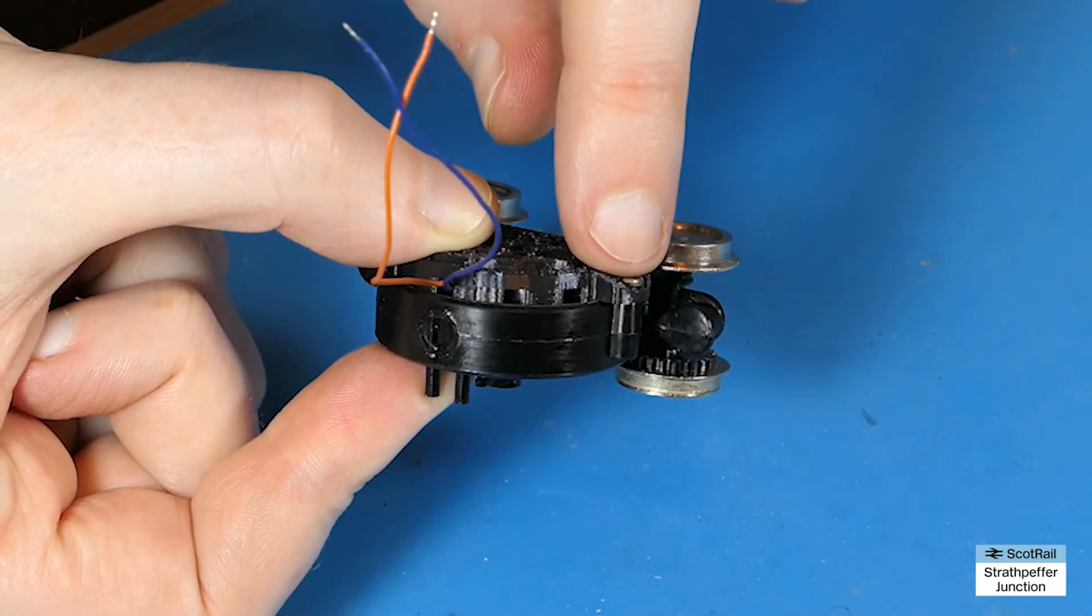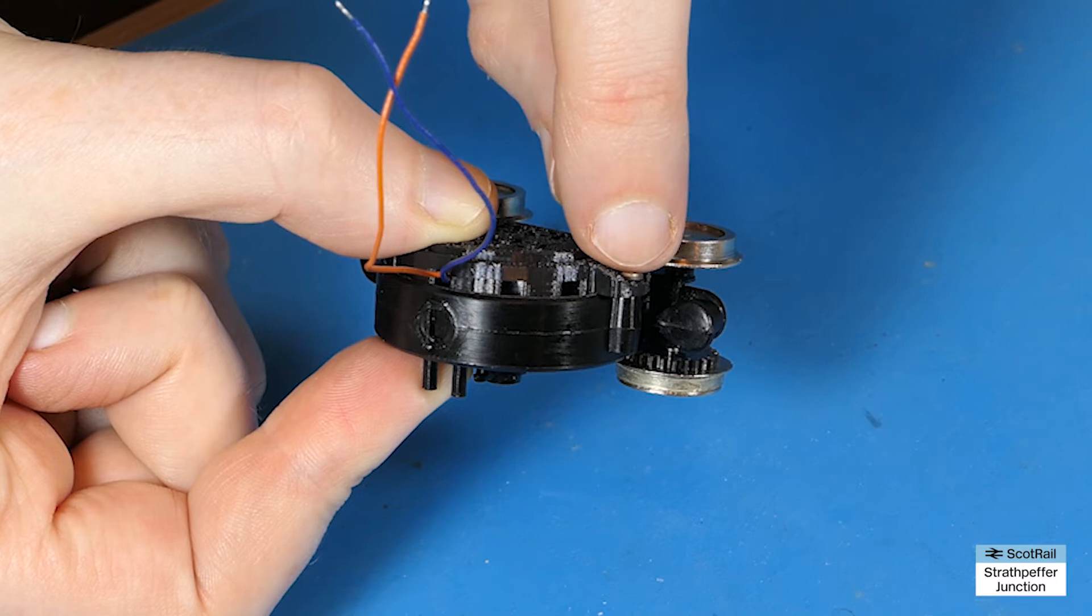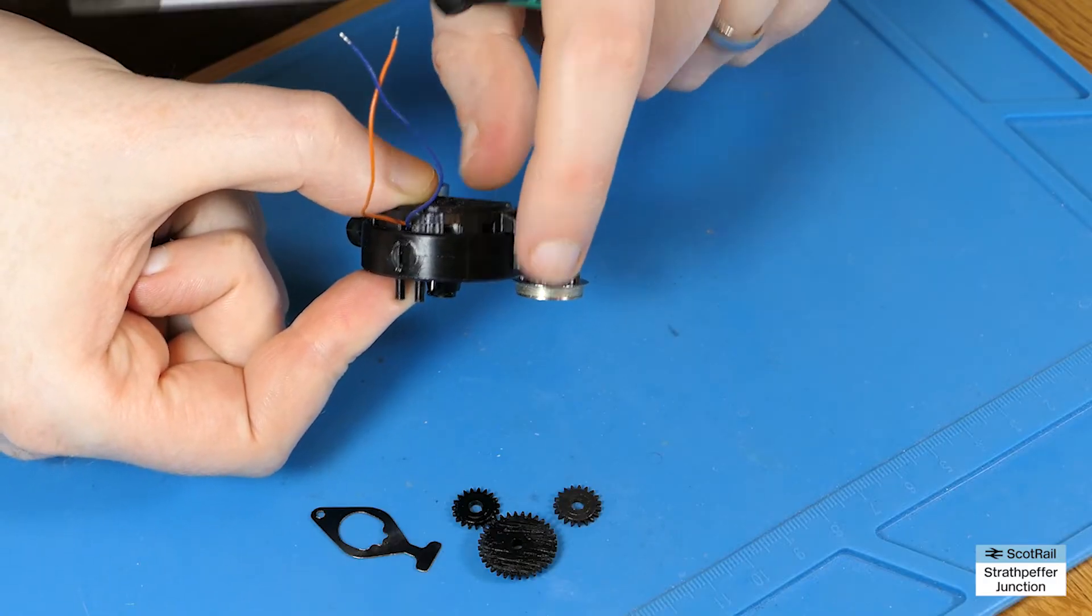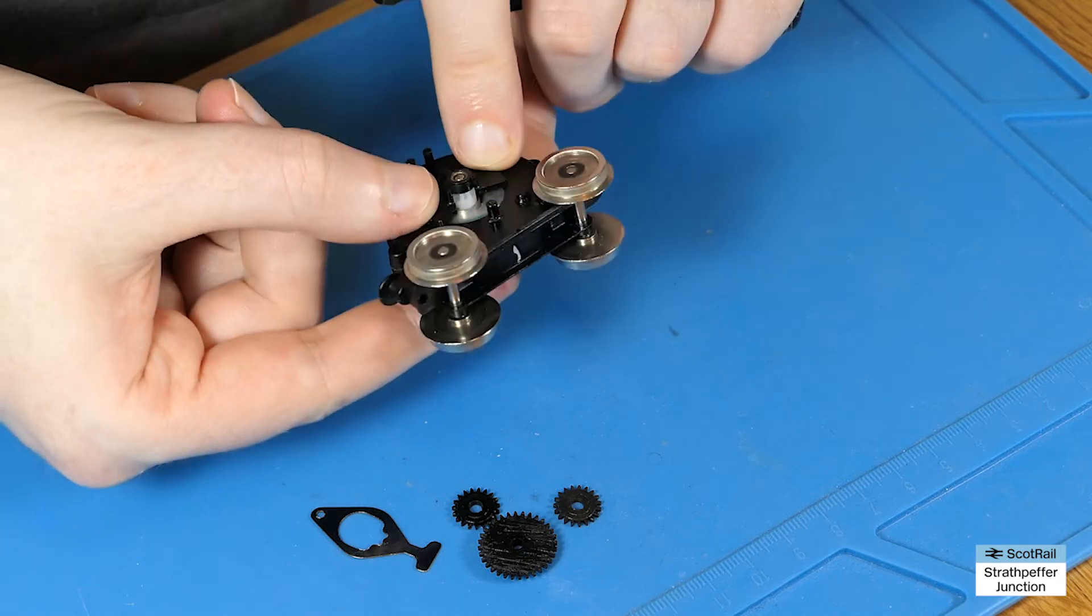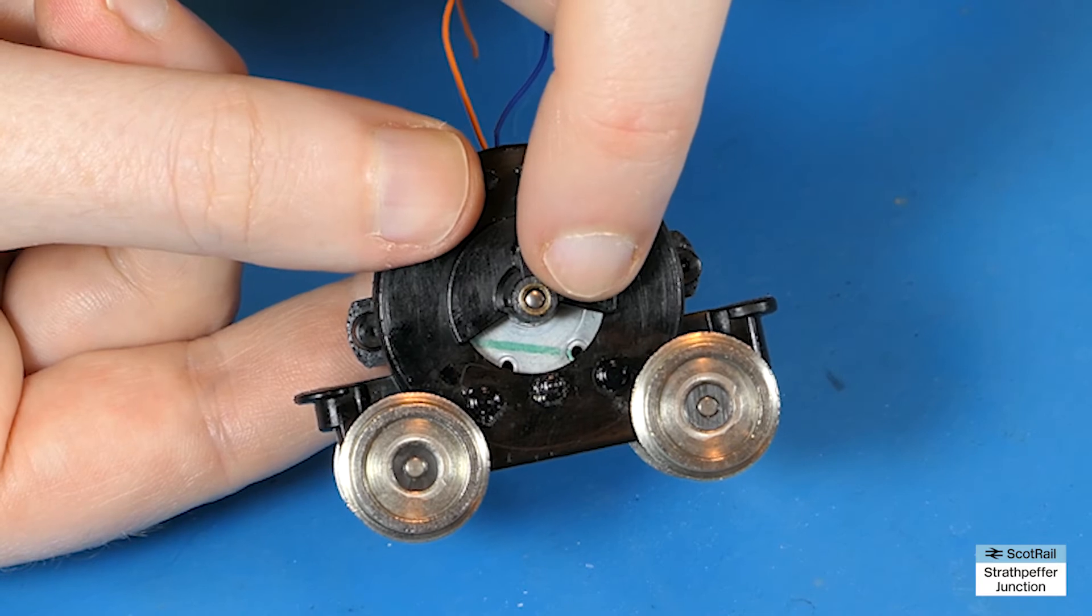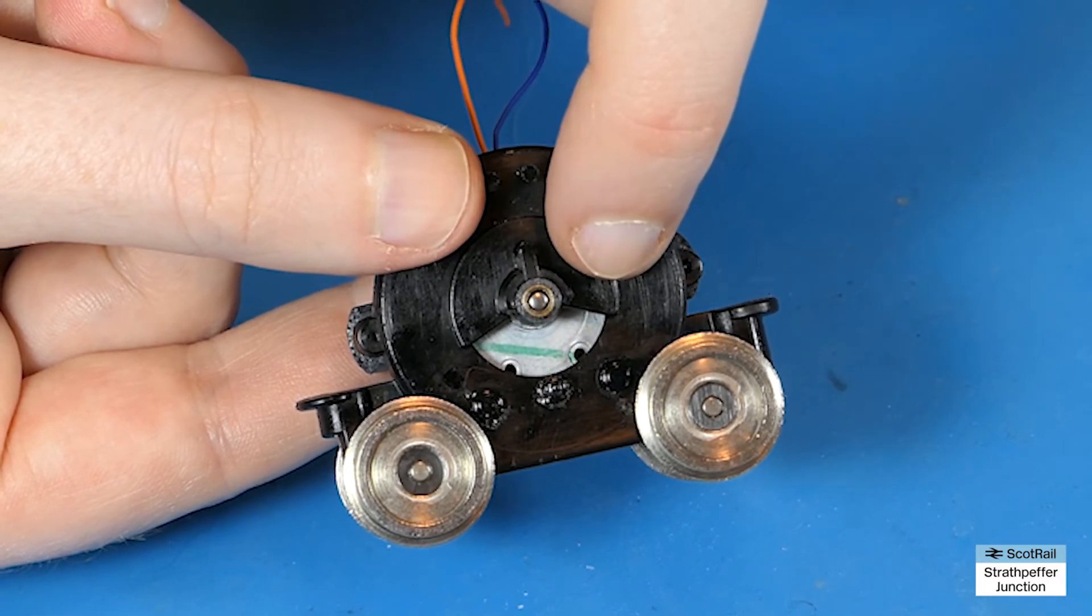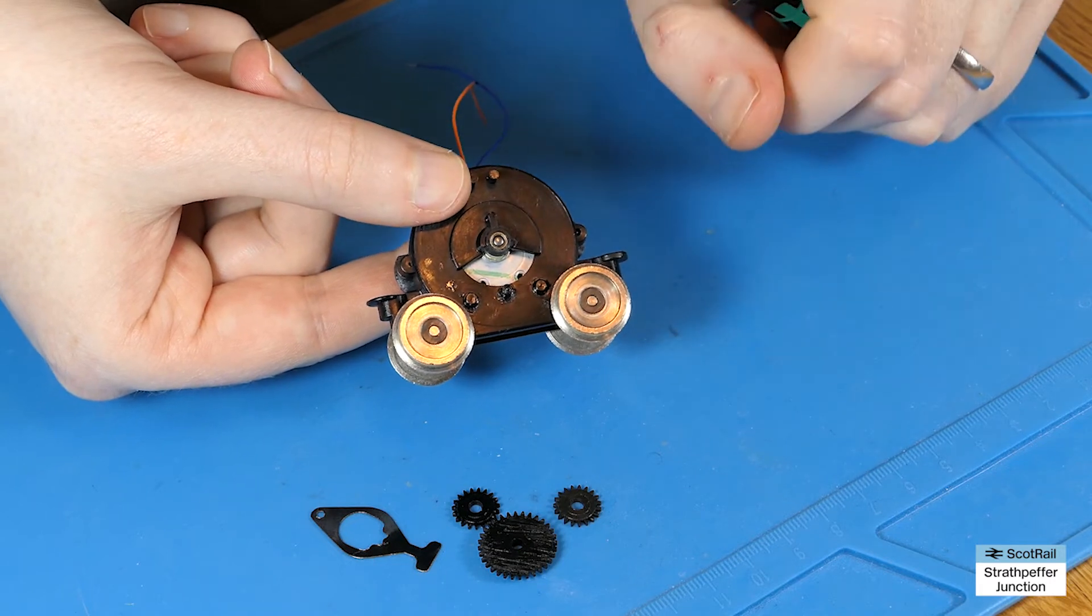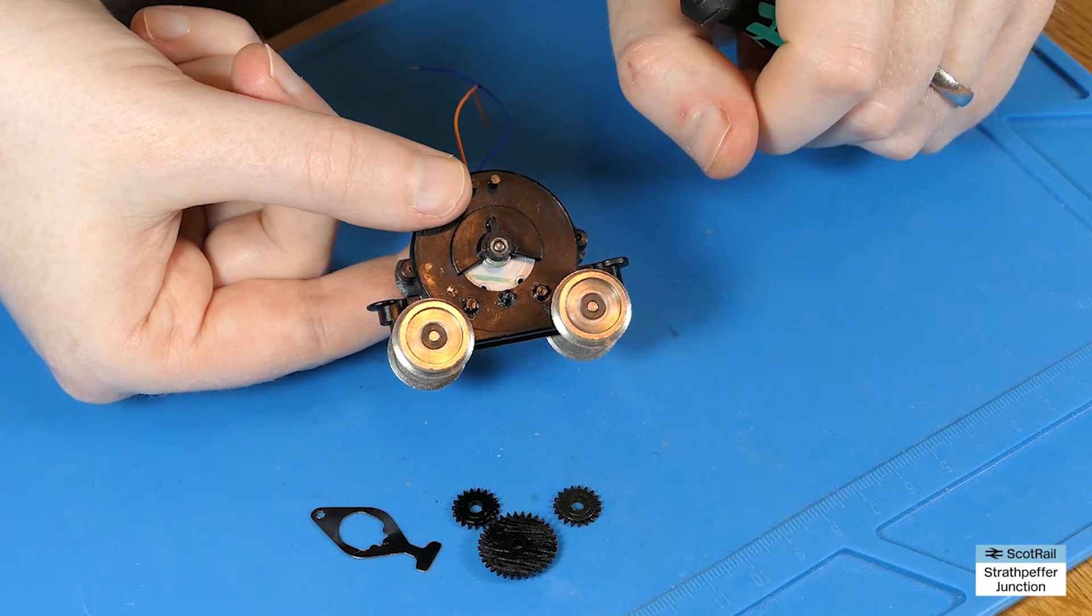You just want to nip them up and maybe back it off just a fraction after you've nipped it up. That's all you need - they don't need to be clinging on for dear life. So that's us tightened those screws up and the shaft's dead centered, so I'll reassemble these cogs here and show you them working nice and smoothly again.